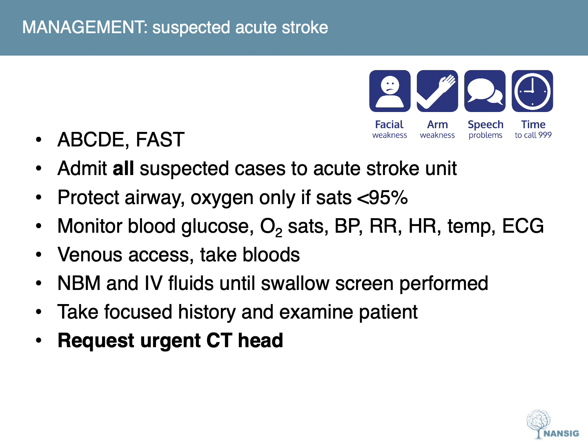Let's end by looking at the management of these patients. Initial assessment of a suspected acute stroke should include the primary survey. Outside hospital, a validated tool such as FAST should be used to screen people with sudden onset of neurological symptoms for stroke or TIA, and hypoglycemia should be excluded. All suspected cases of stroke should be immediately admitted to a specialist acute stroke unit. The patient's airway should be protected, but oxygen should only be given if SpO2 is less than 95%. Monitor the patient's glucose, oxygen sats, blood pressure, respiratory rate, heart rate, temperature and ECG. Treat any hyperglycemia, establish venous access and take bloods. The patient should be nil by mouth and given IV fluids for hydration until a bedside swallow screen is performed.